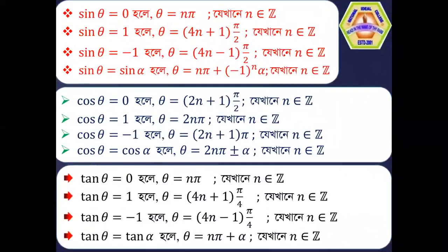Let us look at the important formulas. In the case of sine, there are six formulas: sin θ = 0 gives θ = nπ; sin θ = 1 gives θ = (4n+1)π/2; sin θ = −1 gives θ = (4n−1)π/2; sin θ = sin α gives θ = nπ ± (−1)^n · α.